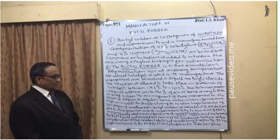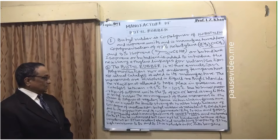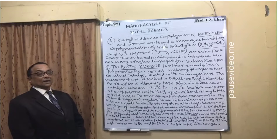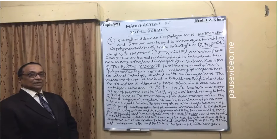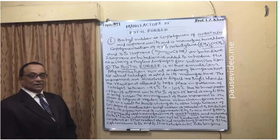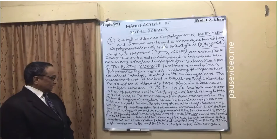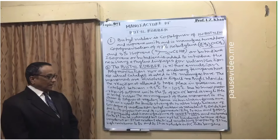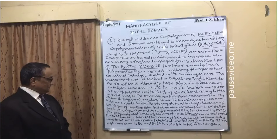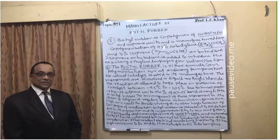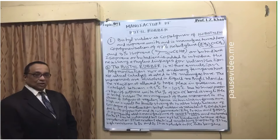Because of the low degree of unsaturation, butyl rubber is resistant to oxidation. Due to its impermeability to air and gases, it is widely used to manufacture tubeless tires and inner tubes for automobiles, as well as other parts like gaskets. It can be vulcanized but cannot be hardened because of less unsaturation. It has excellent electrical insulating properties, high resistance to oxidation in the presence of oxygen and ozone, and is soluble in hydrocarbons like benzene.